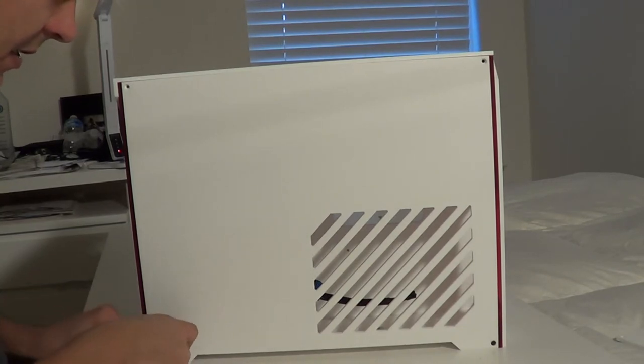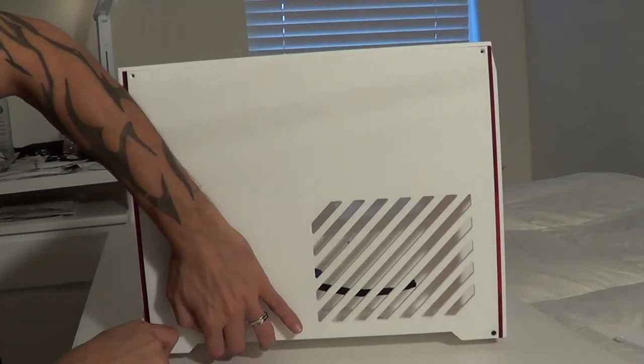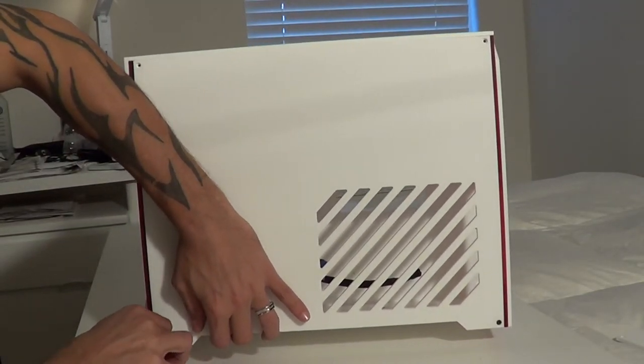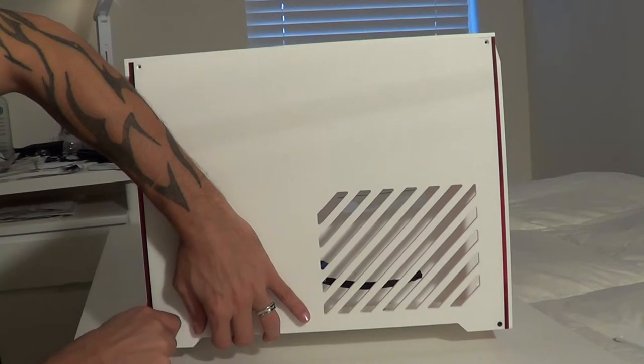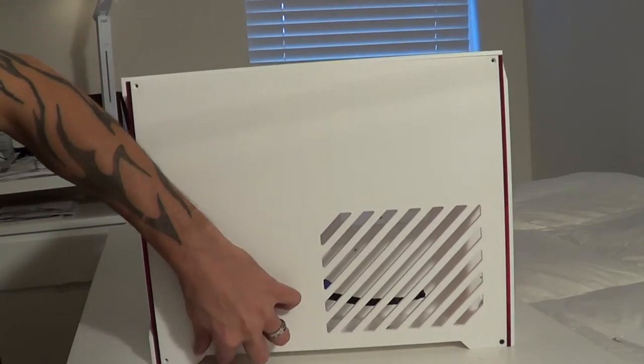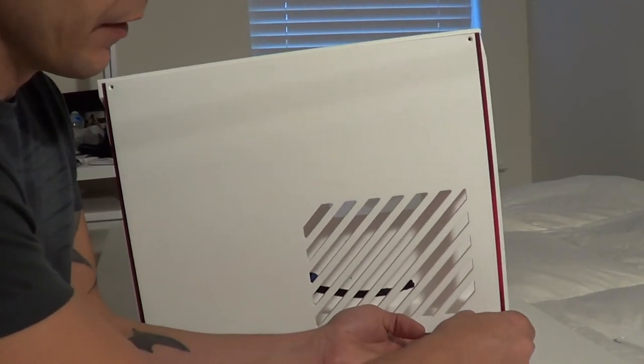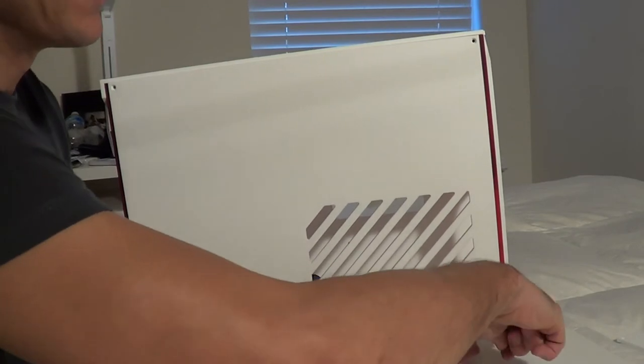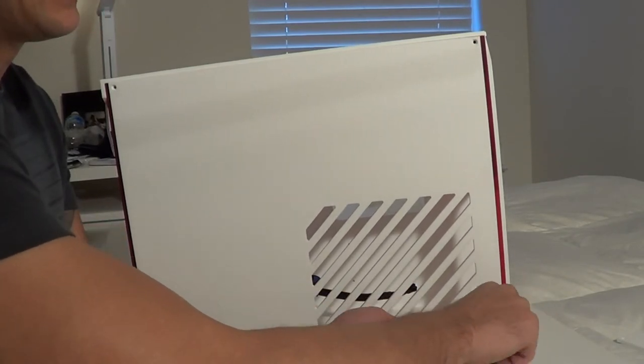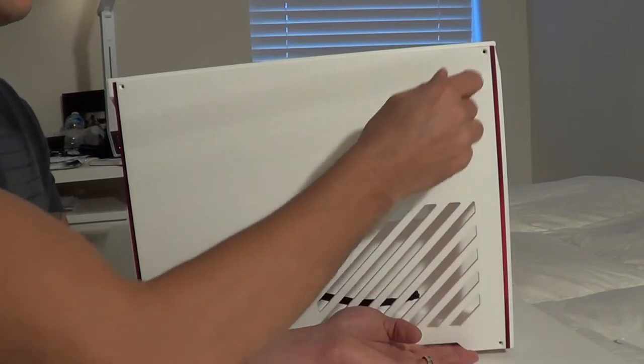Now this entire case has been put together with two different length screws. You have 6 millimeter and 10 millimeter. And the general rule of thumb is anytime you are screwing through two pieces of plexi, it will be a 10 millimeter. And anytime you go through one piece, it will be a 6 millimeter.